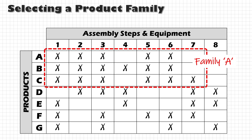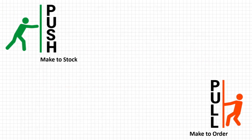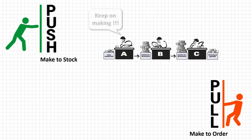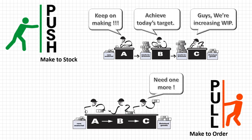Before moving on to make our first map, there is one more thing I want you to understand: the difference between push and pull types of production systems. Most of us already know that in a push system the material is pushed down the process line based on a forecast or a predetermined schedule, and in a pull system the material is pulled from the previous process based on the actual customer's demand. This statement is mostly correct but at the same time pretty generic.